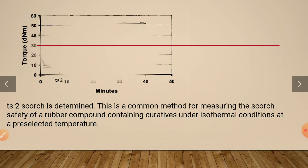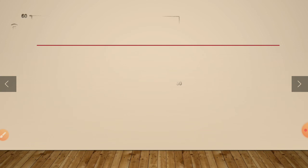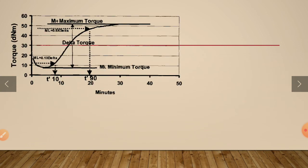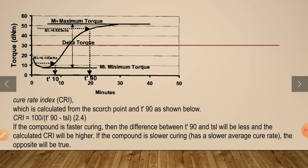TS2 is determined from the minimum torque on the graph. This completes the explanation of the graph. TC90 is calculated from the maximum torque — specifically from the difference between maximum torque and minimum torque, with the minimum torque value added back.